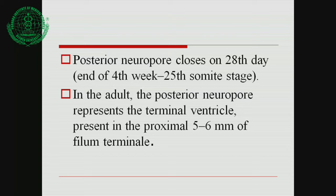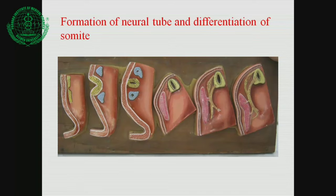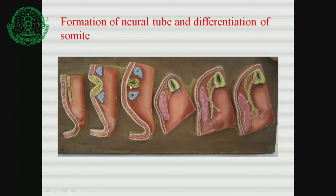So there is closure of both the anterior and posterior neuropores in relation to the somite period. The neural tube model shows the surface ectoderm, neuroectoderm, and neural groove/fold stages. Simultaneously, somites differentiate into sclerotome, dermatome, and myotome. The neural tube differentiates into three layers: the ependymal layer near the central cavity, the mantle layer, and the marginal layer.